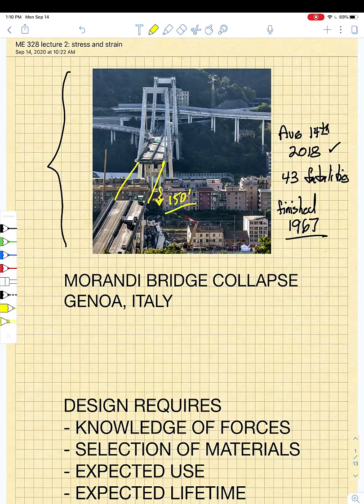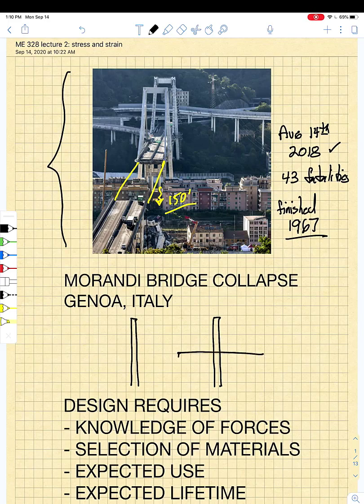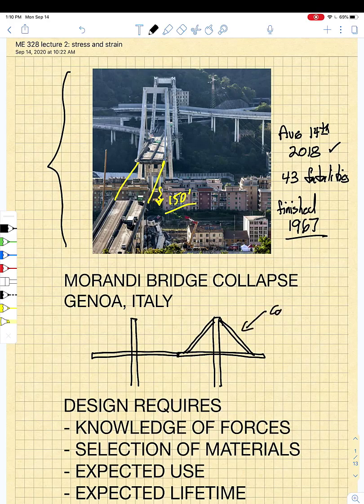It happened because people failed to heed the warnings of the bridge inspectors. The Morandi Bridge is a classic cable-stayed bridge where there are vertical support towers, and then from the support towers, the bridge sections are cantilevered out. Those cantilevered sections are supported by what are called cable stays. So this is a cable stay bridge.